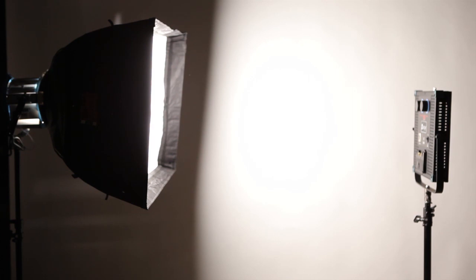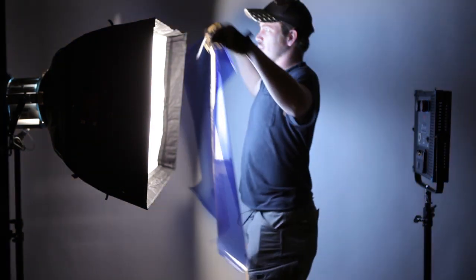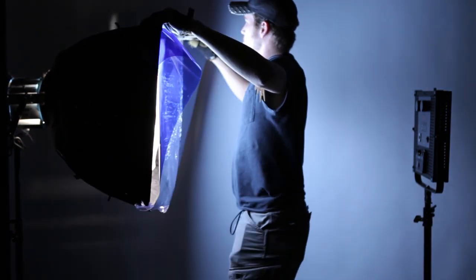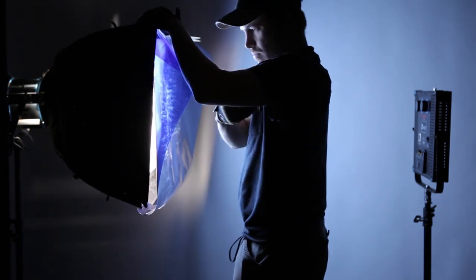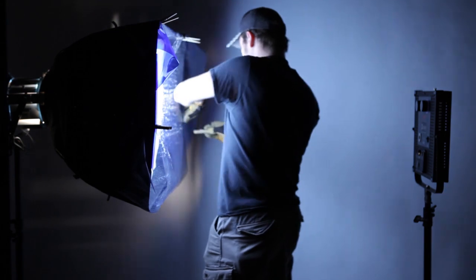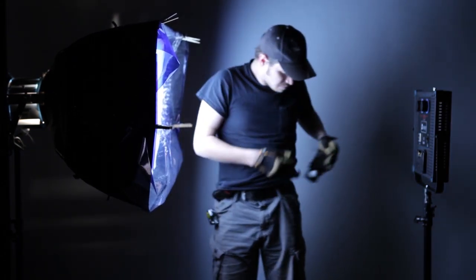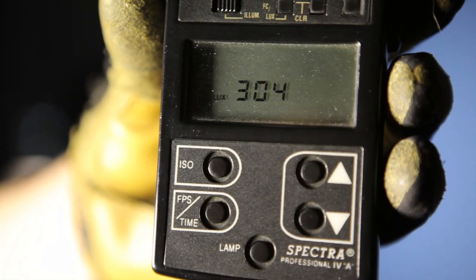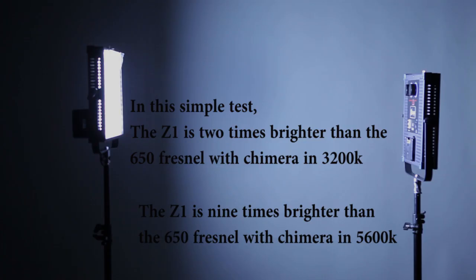Part four, we're going to put full blue on an Aries 650 and take a light reading. Three hundred and four. Zabolite Z1 outperforms 650 with Chimera in both 3,200 degrees and in 5,600 degree tests.